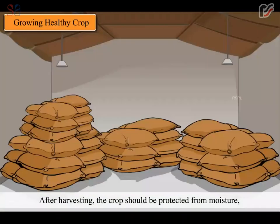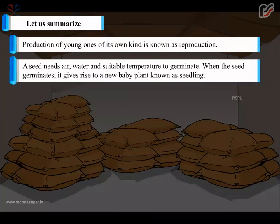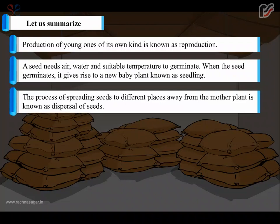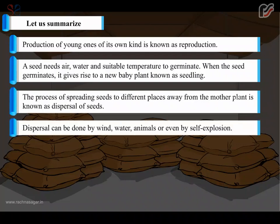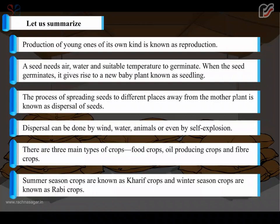After harvesting, the crop should be protected from moisture and small animals like insects, rats, squirrels, birds etc. To summarize: production of young ones of its own kind is known as reproduction. A seed needs air, water and suitable temperature to germinate, giving rise to a seedling. The process of spreading seeds to different places away from the mother plant is known as dispersal of seeds, which can be done by wind, water, animals or self-explosion. There are three main types of crops: food crops, oil producing crops and fiber crops. Summer season crops are known as kharif crops and winter season crops are known as rabi crops.